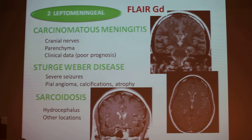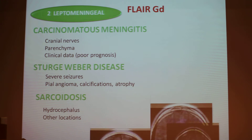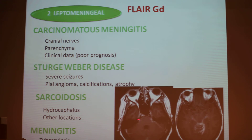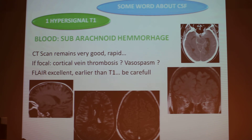And tuberculosis of course — more seldom, but it can also give not only abscesses or brain lesions but also leptomeningeal enhancement. More about the CSF: when you have a T1 hyper-signal, it is blood most of the time. It is a subarachnoid hemorrhage that can be diffuse or very localized. If it is very localized, think of a cortical vein thrombosis — think of a hemorrhagic complication of vein thrombosis.